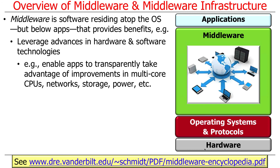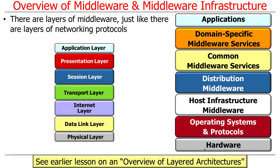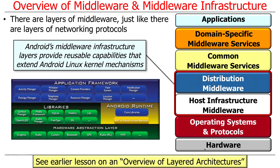If you think of an operating system as a hardware abstraction layer — abstracting you from the details of the ARM chip versus the Intel chip versus the PowerPC chip — you can think of some layers of middleware as being an abstraction layer for the operating systems, which are also different. So it's just raising the level of abstraction another notch. There are layers of middleware just like there are layers of network protocols, and Android's middleware infrastructure really falls into the host infrastructure middleware layer and the distribution middleware layer.